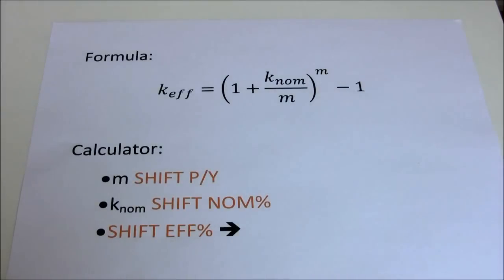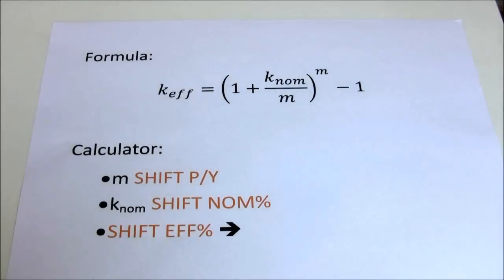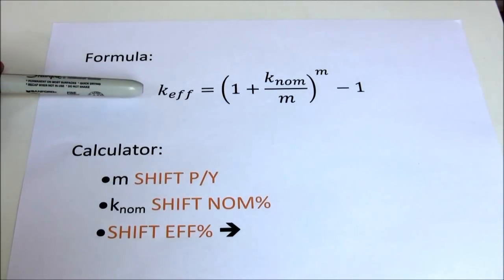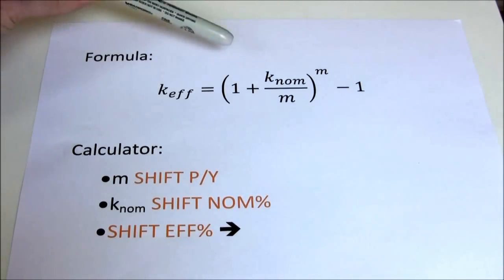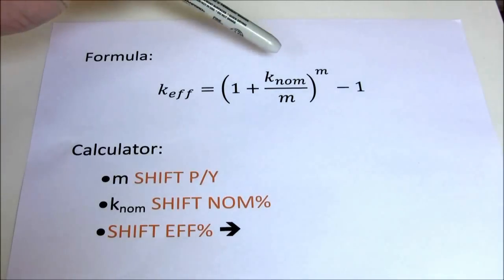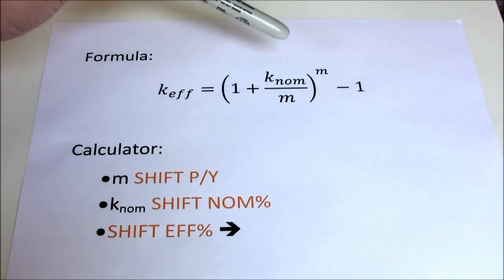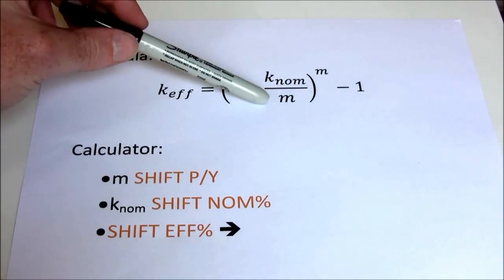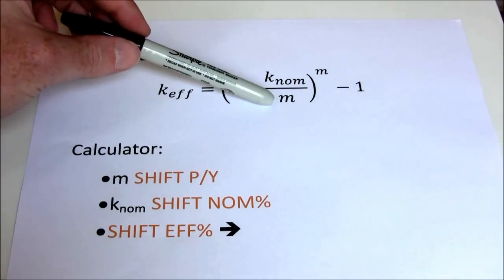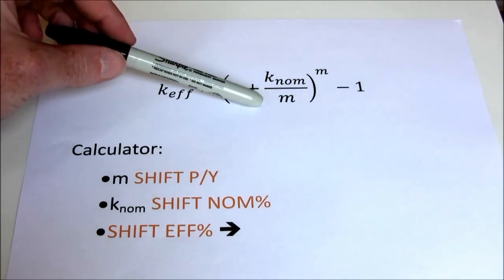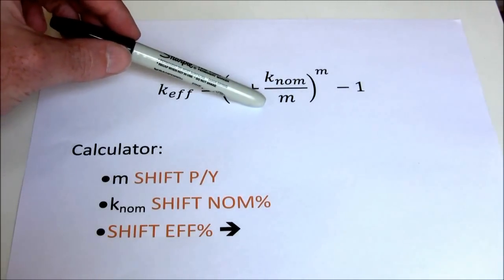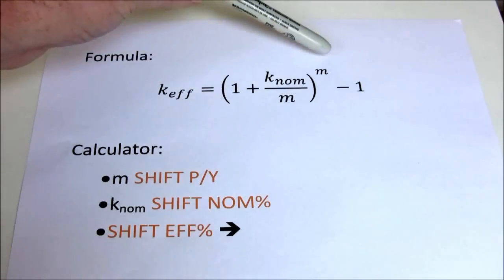When we want to make that calculation, we can either use a formula or our financial calculator. The formula is set up as 1 plus the nominal rate divided by M, the number of compounding periods, all raised to the M power, minus 1.